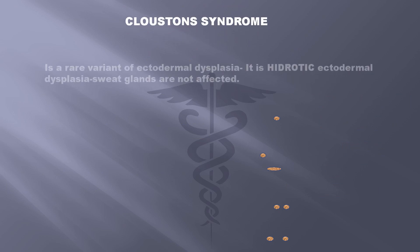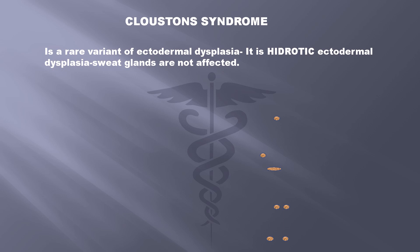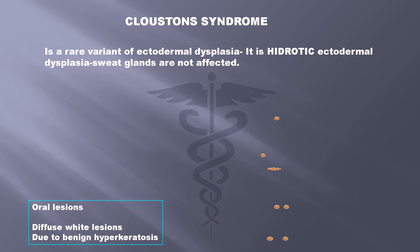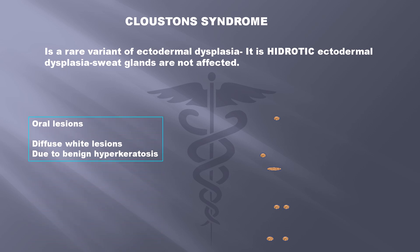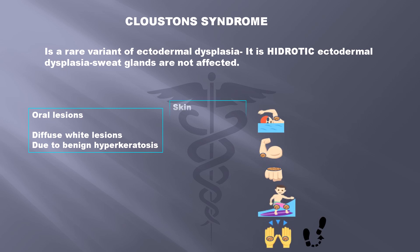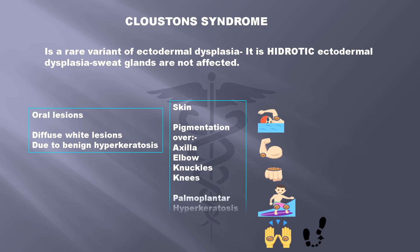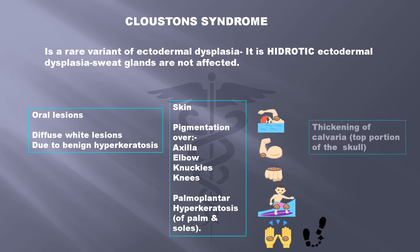Klauston syndrome is a rare variant of ectodermal dysplasia. It is called hydrotic ectodermal dysplasia where the sweat glands are not affected. Clinically oral lesions appear as diffuse white lesions due to benign hyperkeratosis. Skin shows pigmentation over the axilla, elbow, knuckles, and knees. Palms and soles of feet are also hyperkeratotic, and this is called palmoplantar hyperkeratosis. There is thickening of the calvaria, that is the top portion of the skull.